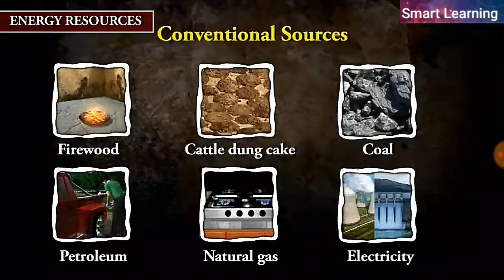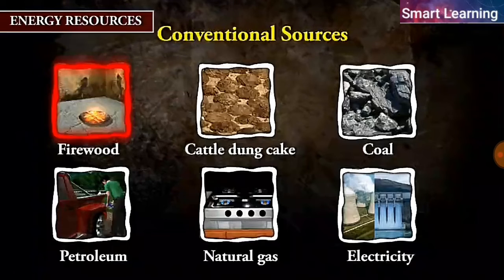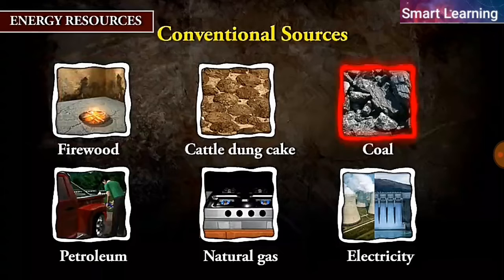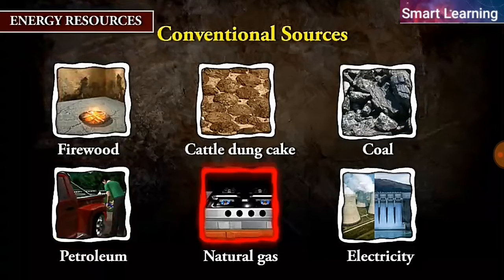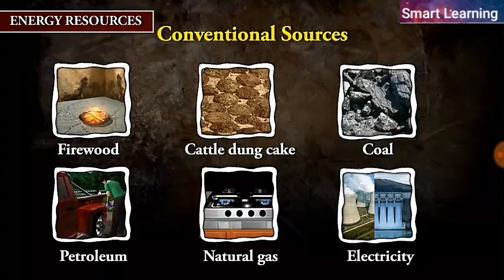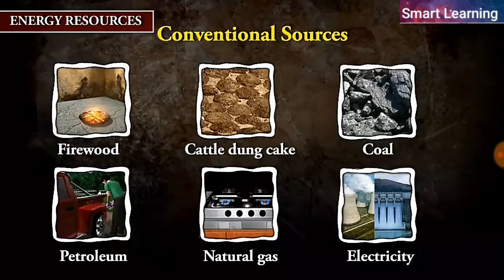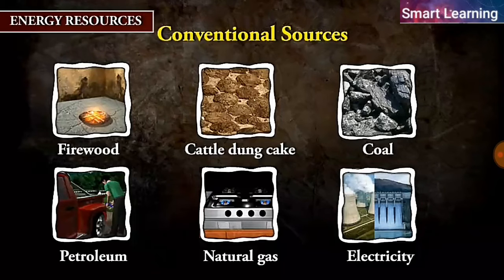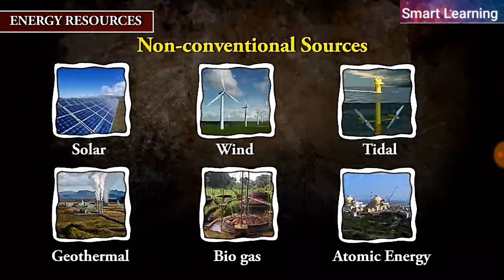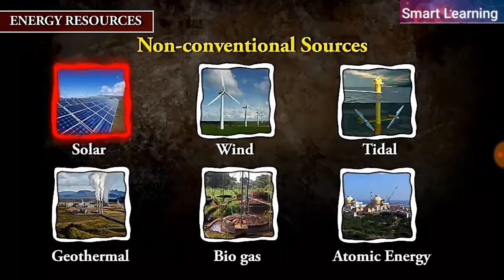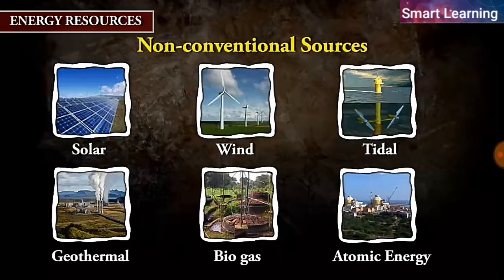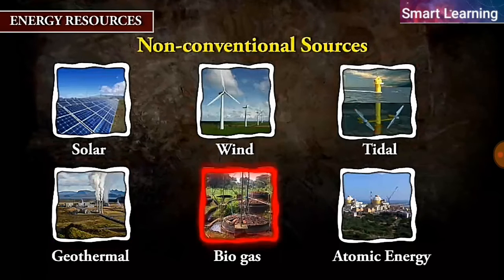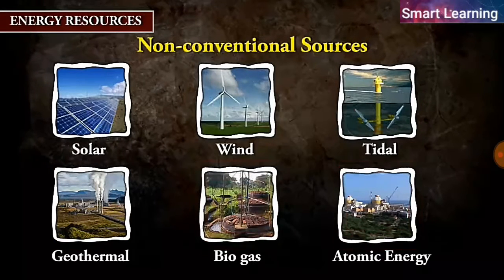Conventional sources include firewood, cattle dung cake, coal, petroleum, natural gas, and electricity — both hydro and thermal. Non-conventional sources include solar, wind, tidal, geothermal, biogas, and atomic energy.